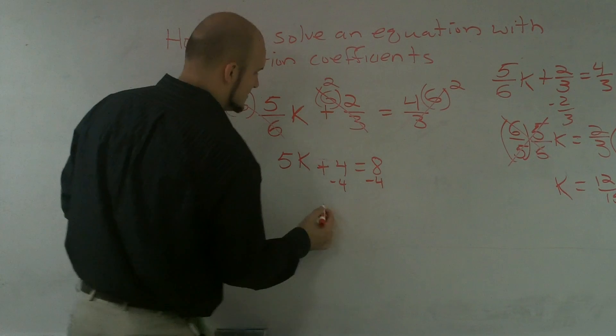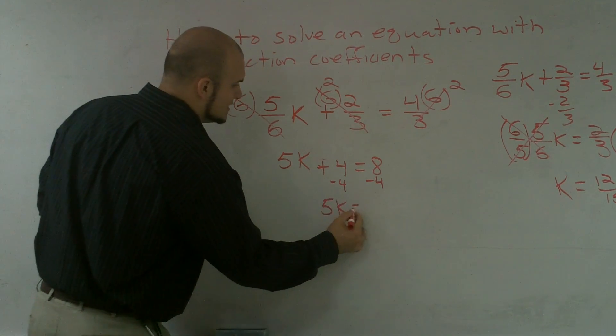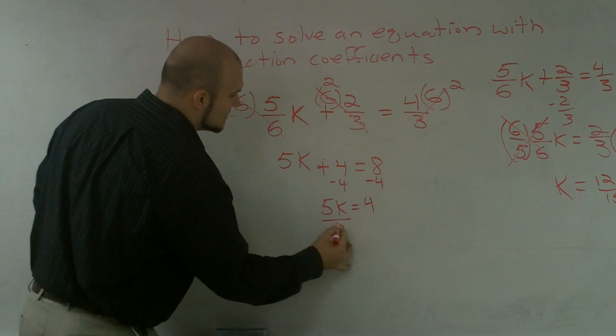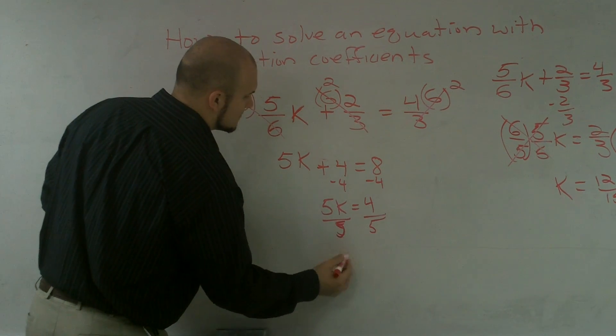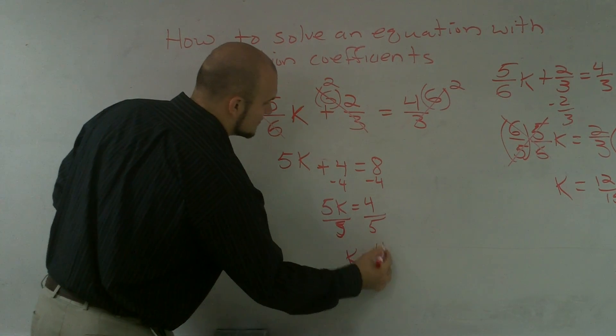So now I subtract the four on both sides. Five-k equals four. Divide by five. K equals four-fifths.